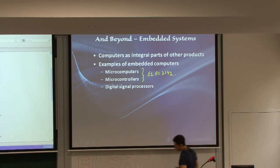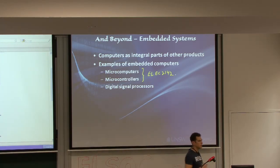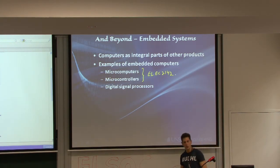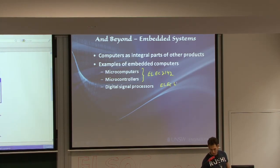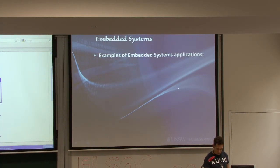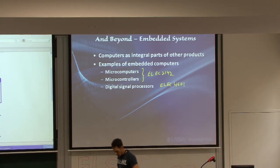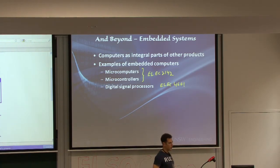Digital signal processors are not quite the same as microprocessors — they have very specific jobs to do signal processing. You will learn the basics of signal processing in ELEC 3104. And there is a fourth-year elective, ELEC 4601, which will take the knowledge from DSP and from what we teach in ELEC 2142 and combine it all to build optimized DSP processors.